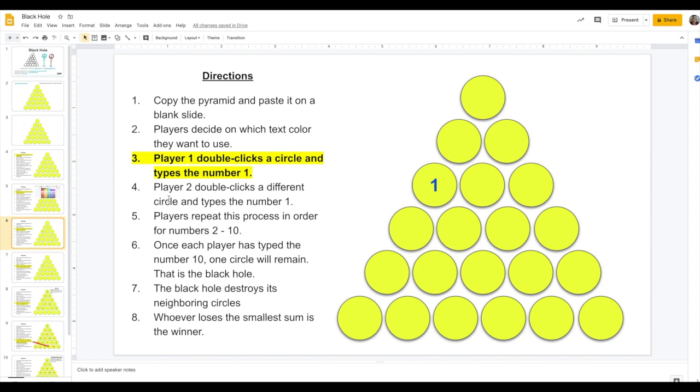Make sure it's your font color that you selected. And then Player 2 will do the exact same thing. Double-click a different circle, anyone you want, and do the number 1. The second round, you double-click a new circle, you add the number 2, and so on.